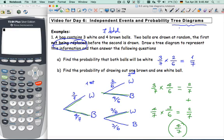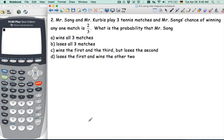Let's see what example two has for us. Mr. Song and Mr. Kerbis play three tennis matches. Mr. Song's chance of winning any match is two thirds. So he's got a bit of an advantage. This time, unlike the last example, we're going to play each other. So Mr. Song against Mr. Kerbis.